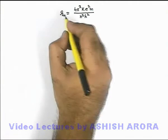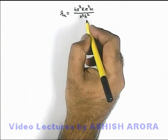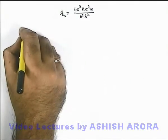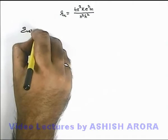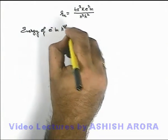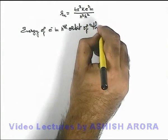As we obtain the value of radius of nth orbit by using Bohr's model as well as the potential energy given in the problem, we can now directly write down the energy of electron in nth orbit of this atom.